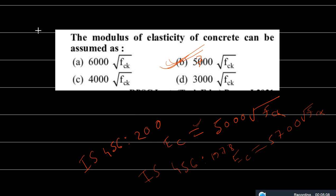Another important question: what is the tensile strength or flexural strength of concrete? The tensile strength or flexural strength of concrete is 0.7 times the square root of fck. This is a very important objective-type question.